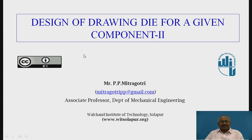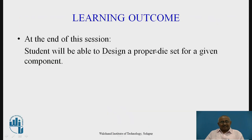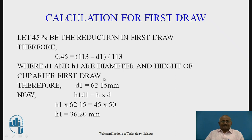In this session, we are going to study the design of a drawing die for a given component, Part 2. In the earlier session, we have already studied Part 1 of the design of a drawing die, and in that we came up to the decision of number of draws. The learning outcome for this session will be that students will be able to design a proper die set for a given component. As already stated, in the earlier session we calculated that the number of draws required is equal to 2. So now in this session, we will study the next procedure.